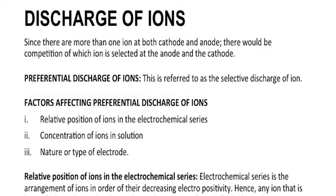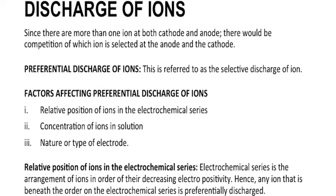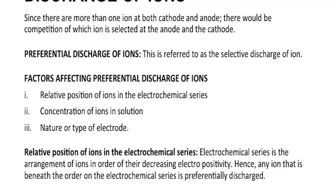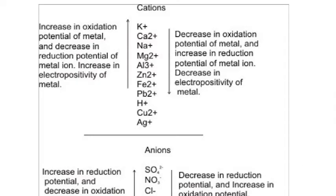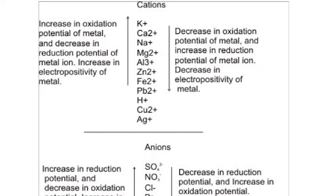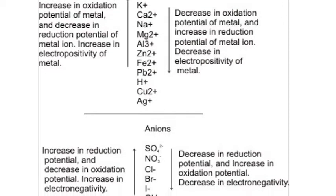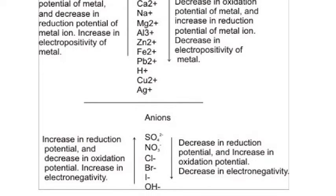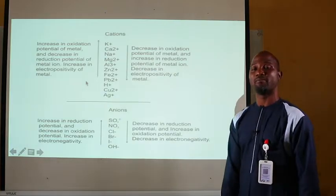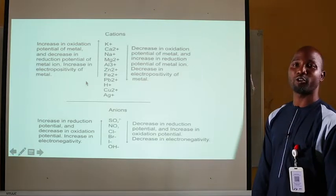The electrochemical series is the arrangement of ions in order of their decreasing electropositivity. Any ion that is beneath another is preferably discharged. Cations are arranged from potassium to silver or gold, and anions from tetraoxosulfate(VI) ion to hydroxyl ion. In the electrolysis of dilute sodium chloride, when sodium and hydrogen compete at the cathode, hydrogen is preferably discharged because hydrogen is beneath sodium on the activity series. Similarly, oxygen from the hydroxyl ion is preferably discharged at the anode because hydroxyl ion is beneath chloride on the electrochemical series.